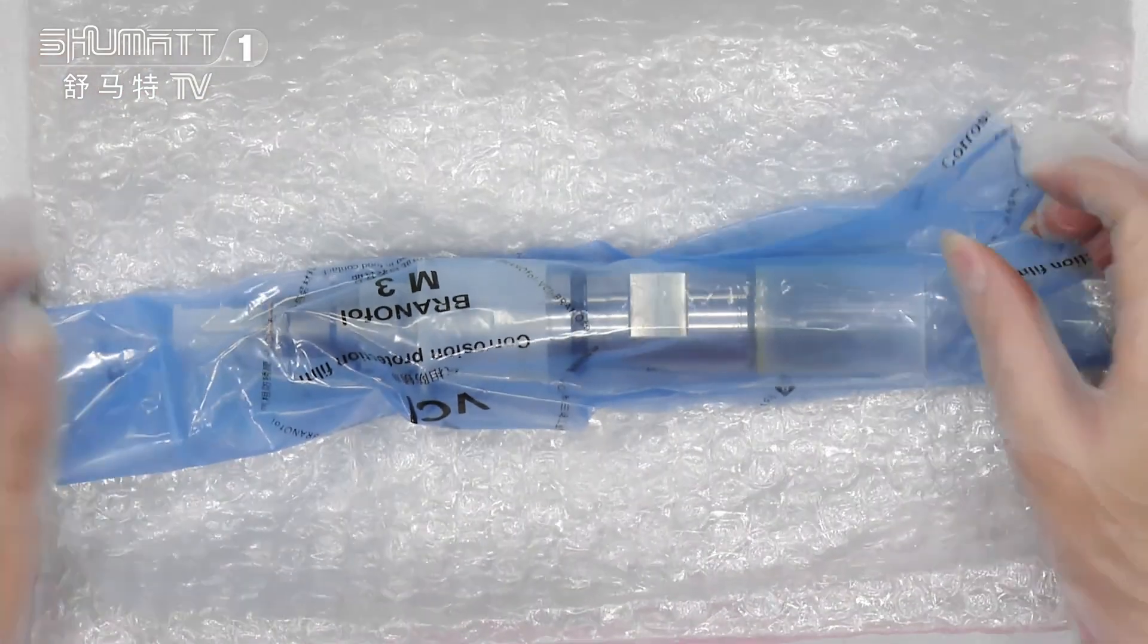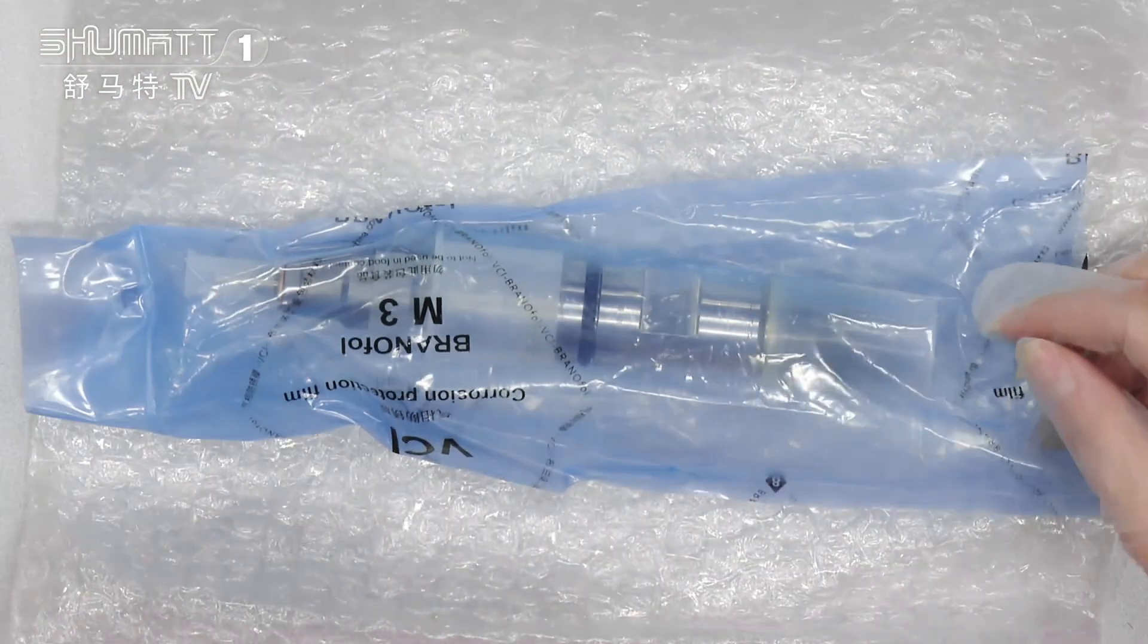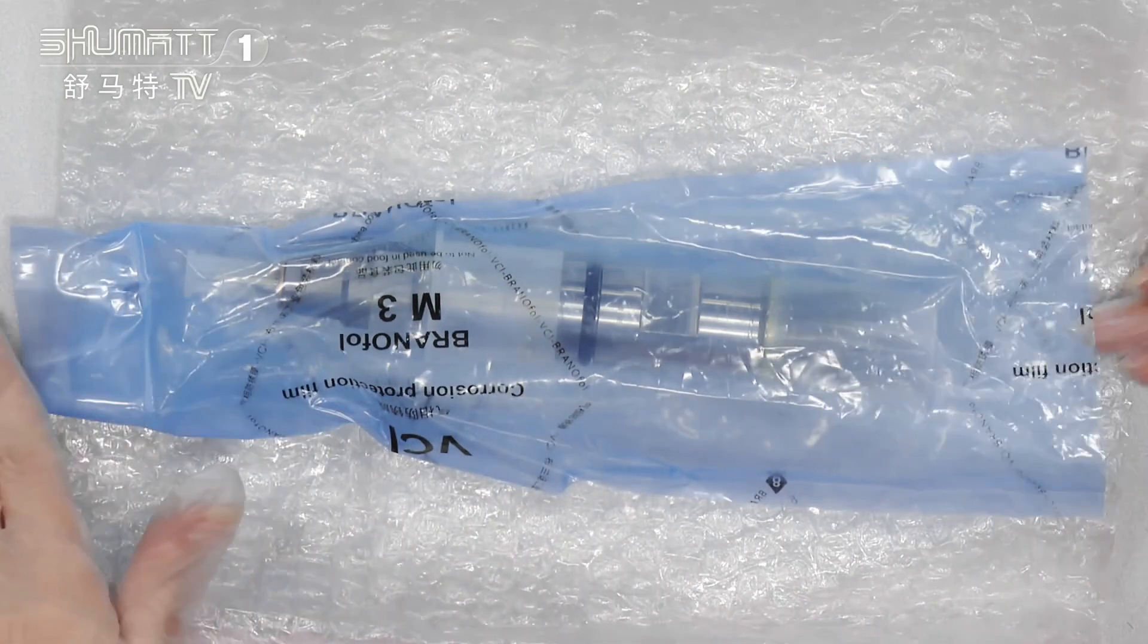We have two layers. The second layer is the blue anti-rust bags.